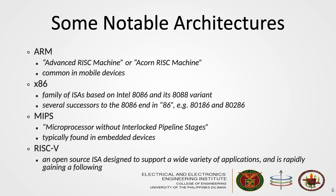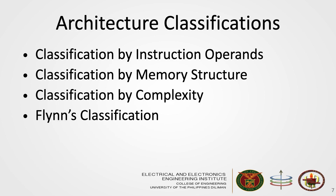Let's talk about some notable architectures used today. One of them is ARM, or the Advanced RISC Machine, which is common in mobile devices. Another is the x86 architecture, which is common in Intel processors. The MIPS architecture is typically found in embedded devices. And there's the open source RISC-V ISA, designed to support a wide variety of applications. There are more architectures out there, and most of them can be classified in terms of instruction operands, memory structure, or complexity.